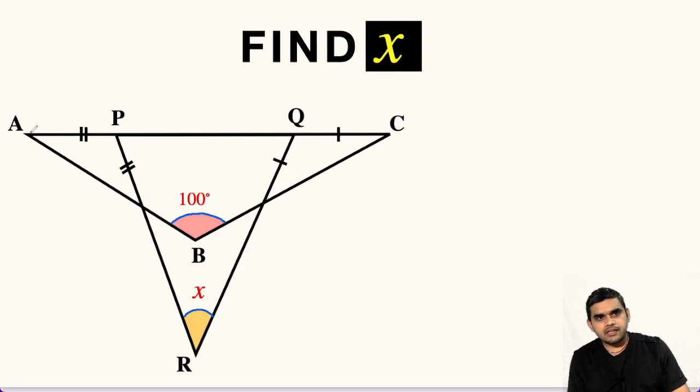Also, we can see that AP equals PM. Let us name this point as M. Likewise, CQ equals QN. Let us name this point as N. These conditions are given to us.